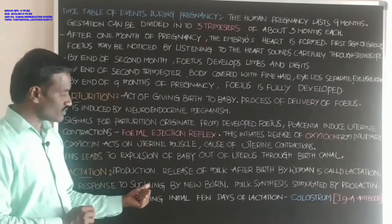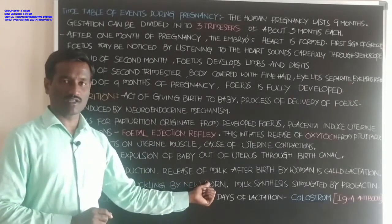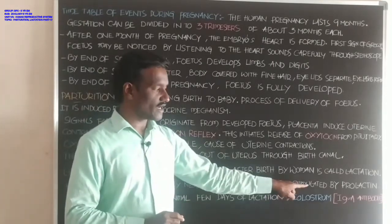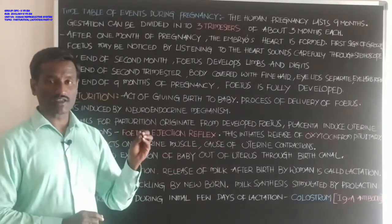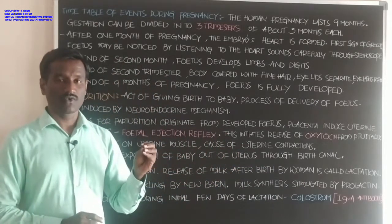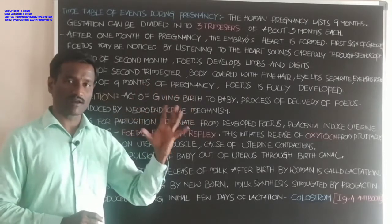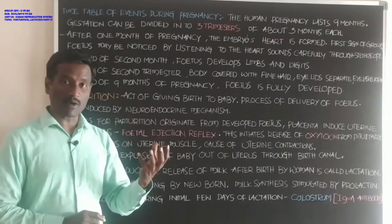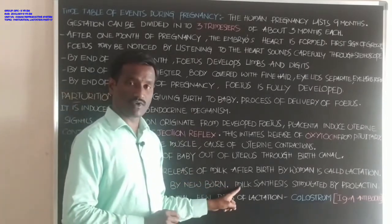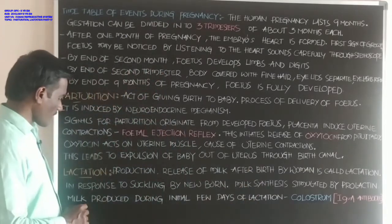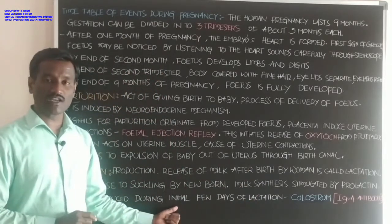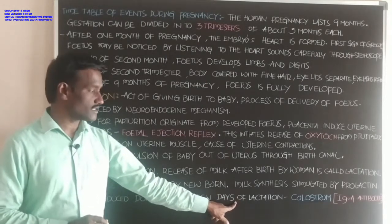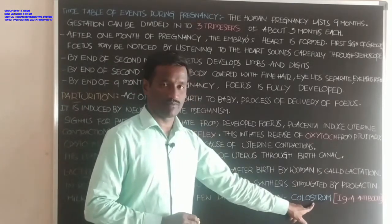In response to suckling by the newborn, milk synthesis is stimulated by the prolactin hormone, which is produced from the anterior part of the pituitary gland. Prolactin acts on the mammary glands to synthesize milk. The milk produced during the initial few days of lactation is called colostrum.